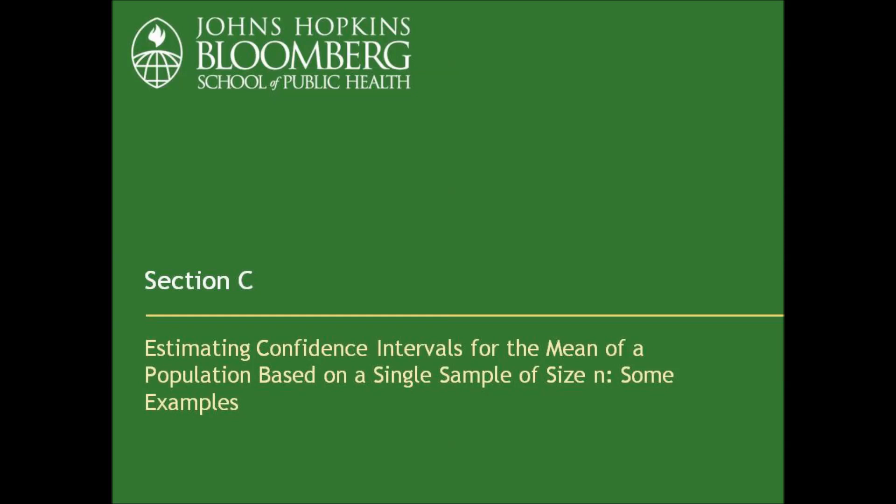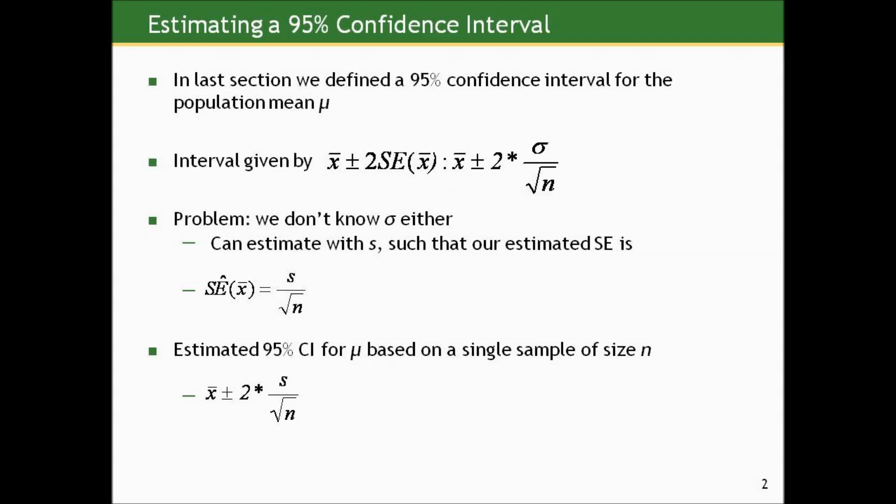Let's talk about estimating confidence intervals for the mean of a population based on a single sample size n. In the last section, we defined a 95% confidence interval for the population mean mu as the sample mean plus or minus two standard errors, computed by taking the population standard deviation sigma divided by the square root of the sample size. But we don't know sigma, so we estimate it from a single sample using s, the sample standard deviation, giving an estimated standard error of s over the square root of n.